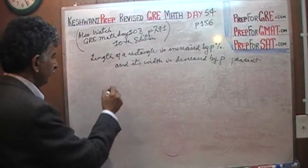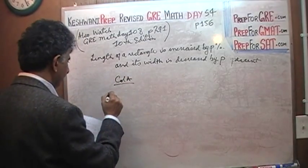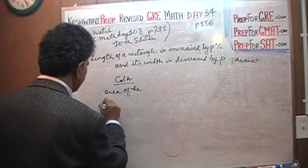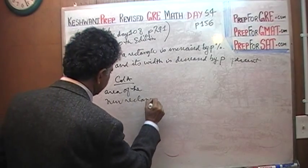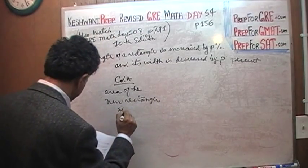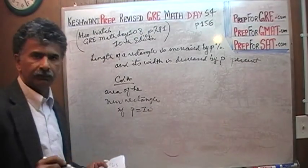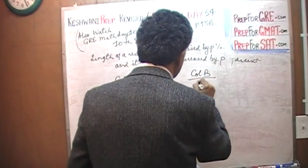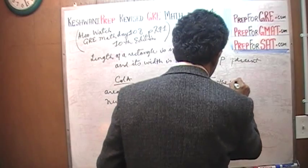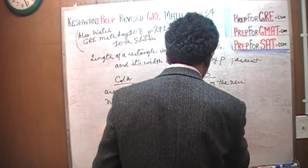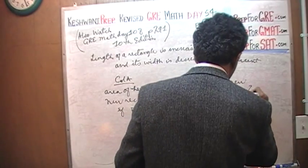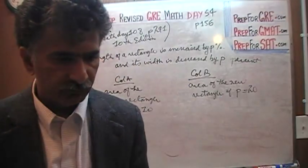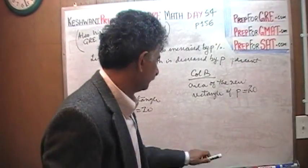And the question was this. In the first column it says what is the area of the new rectangle if P happens to equal 10. So they want you to compare the area of the new rectangle if P happens to be 10 versus the area of the new rectangle if P happens to equal 20. I am going to change the marker because this marker is losing ink.